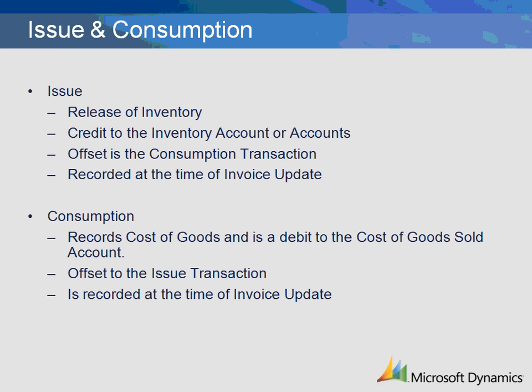The issue transaction is the setup related to relieving the inventory account. The ledger account for issues should be your inventory account used for tracking the inventory associated with the item being sold. If you have multiple ledger accounts associated with your inventory, you will need to break down the posting transactions at the item or item group level. This transaction is recorded at the time of invoice update in Microsoft Dynamics AX. The consumption transaction is the setup related to the recording of cost of goods sold in the ledger. This account will be debited and is the offset to the issue transaction. This transaction is also recorded at the time of invoice update in Microsoft Dynamics AX.